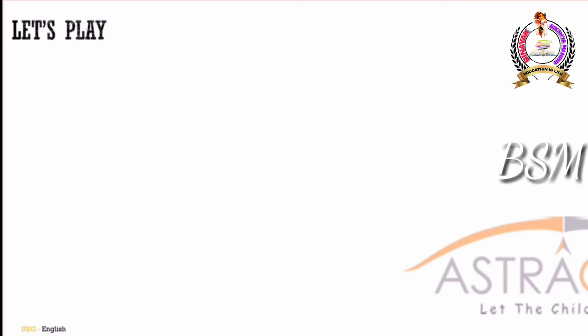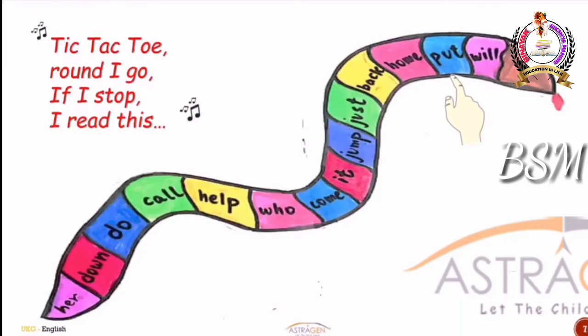Let us sing the song again: Tic-Tac-Toe, round I go. If I stop, I read this. The hand will move on the snake. Children, whenever the finger stops along with the song, you have to read out the word and frame a sentence with it. For example, suppose your finger stops at 'it'.